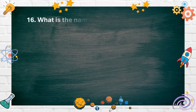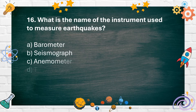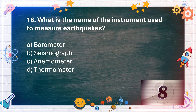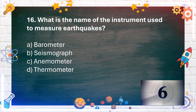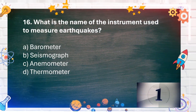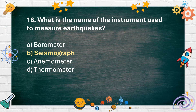Number 16. What is the name of the instrument used to measure earthquakes? A. Barometer. B. Seismograph. C. Anemometer. D. Thermometer. The answer is B. Seismograph.